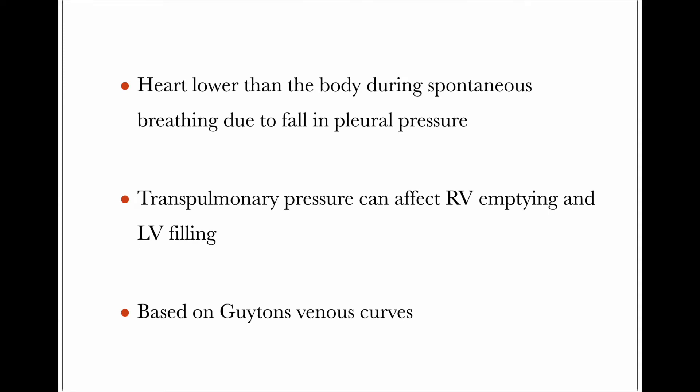During spontaneous breathing, due to the fall in pressure, the heart pressure remains lower than the body. The pressures in the heart go negative because spontaneous respiration creates a more negative pressure. So the pressure of the heart goes lower than the rest of the body — from where blood is drained into the heart — as they are not inside the thoracic cavity. So the negative pressure does not apply to them, causing draining of blood into the heart from the peripheries.